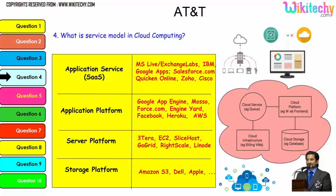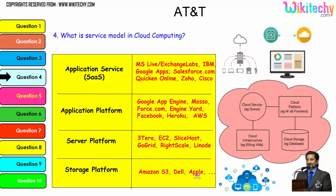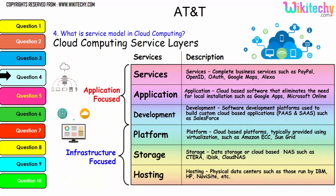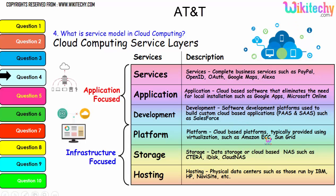Digging further into the service model: the application service layer, application platform layer, server platform layer, and the storage platform is provided by Amazon S3, Dell, and Apple. The important service layers are: services, application, development, platform, storage, and hosting — and there are typical examples under each of these services. These are all important service layers that will also be asked about in cloud computing interviews.